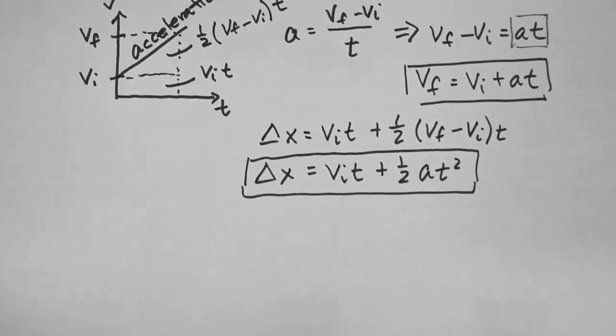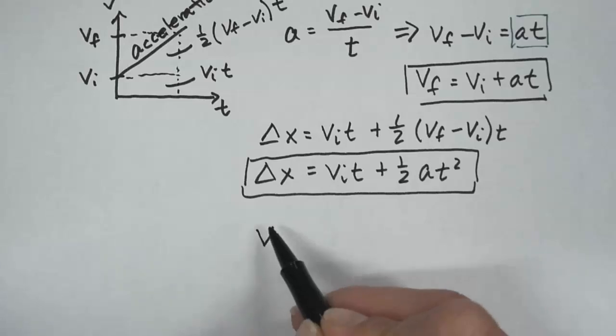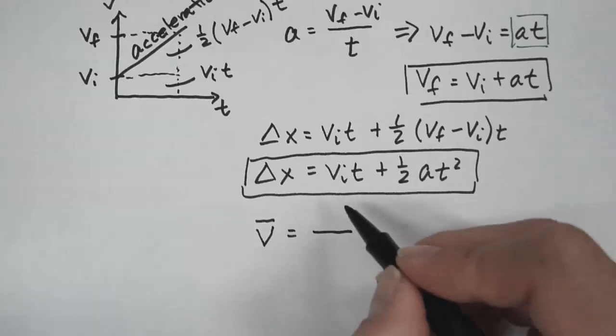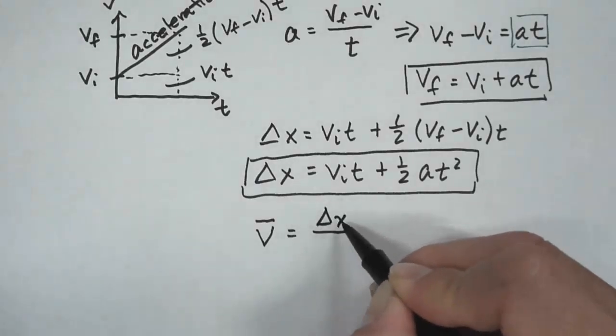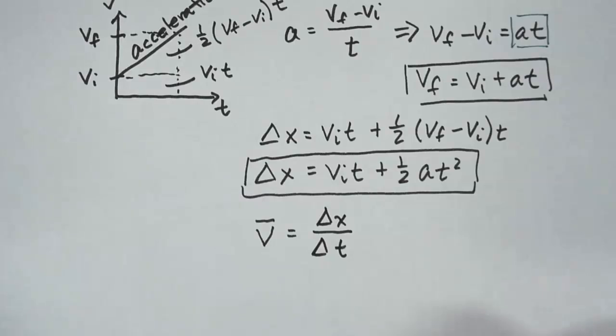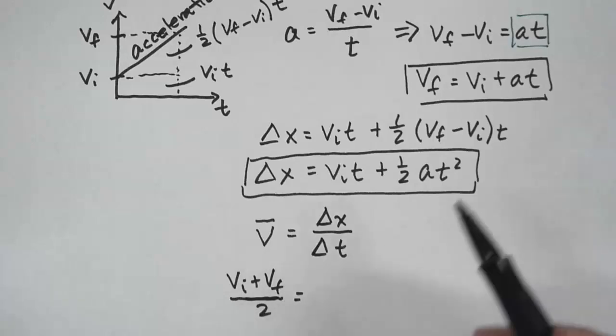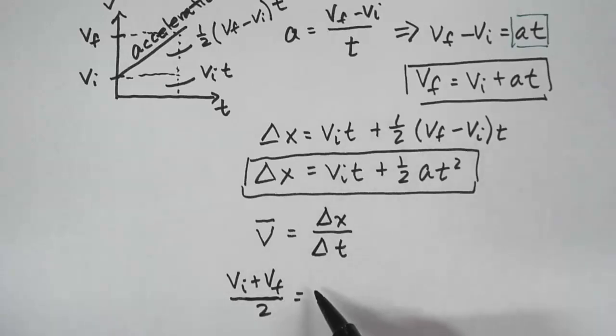For my third kinematic equation, I'm going to use the definition of average velocity, or how we calculate average velocity, which is the displacement divided by the time. Another way to get the average velocity is to take the initial velocity plus the final velocity divided by 2. Now this only works if you're dealing with constant acceleration. So you got to keep in mind that these equations work with constant acceleration. So this will work for constant acceleration: vi plus vf divided by 2 is equal to the average velocity.